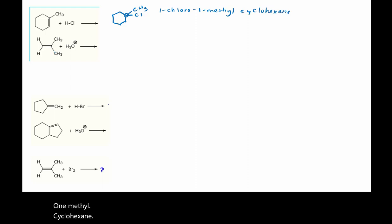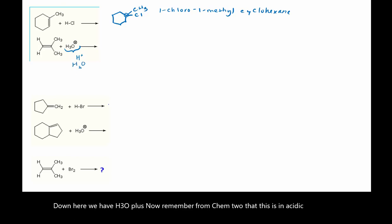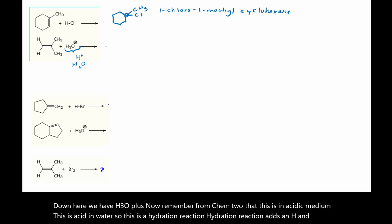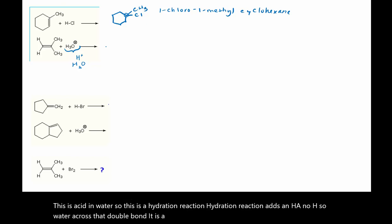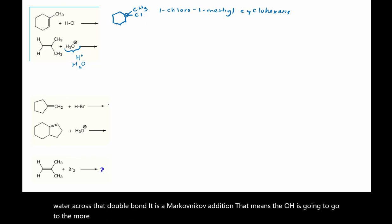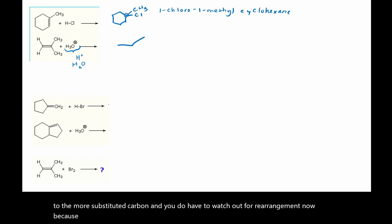Down here we have H₃O⁺. Remember from Chem 2 that this is an acidic medium — acid in water. So this is a hydration reaction. Hydration reaction adds an H and an OH — water — across that double bond. It is a Markovnikov addition, so the OH is going to go to the more substituted carbon, and you do have to watch out for rearrangement. Now because this is our skeleton here, looking at these two carbons—